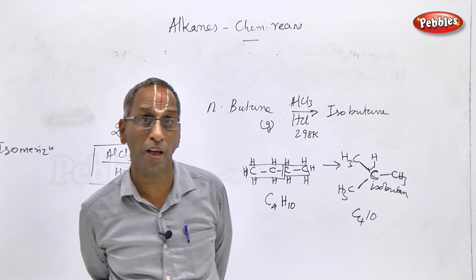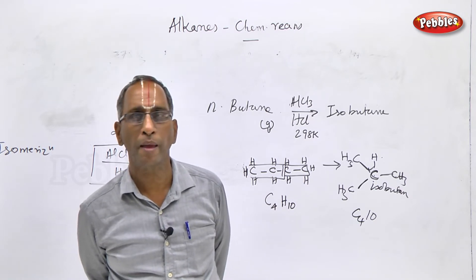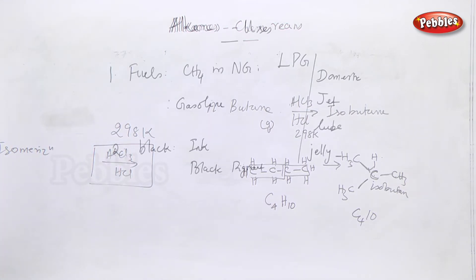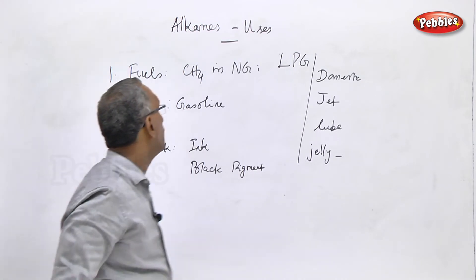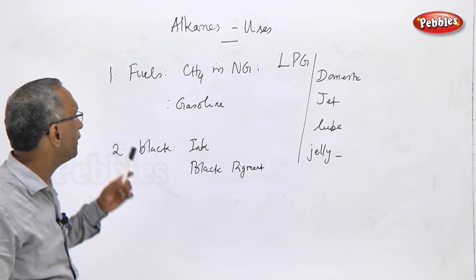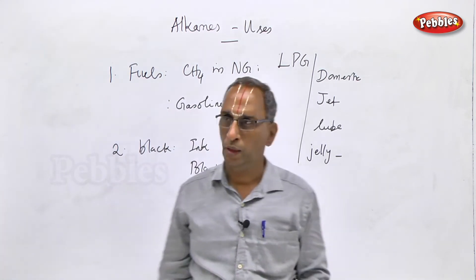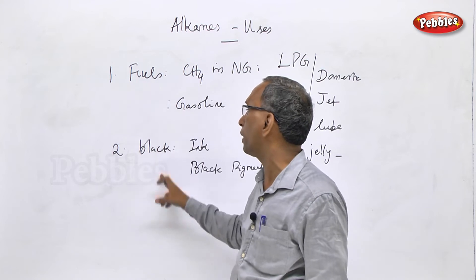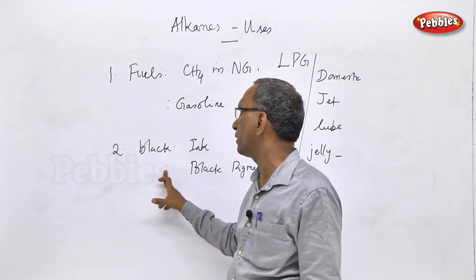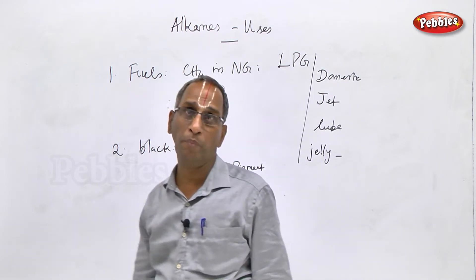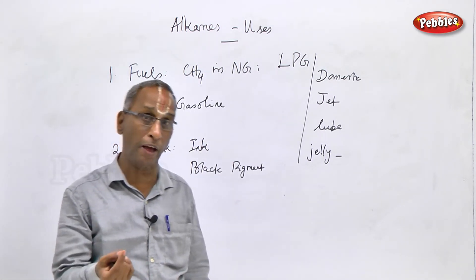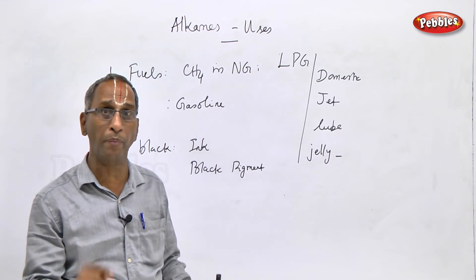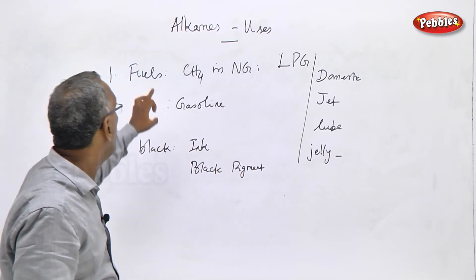They also undergo aromatization. These are the important reactions of alkanes. Now for alkanes with formula CnH2n+2, both aliphatic alkanes and alicyclic alkanes have two important broad areas of application: as fuels and as carbon blacks. Carbon black is used for making ink, black pigment, in various applications. Fuel is a substance which burns in air with liberation of heat energy.